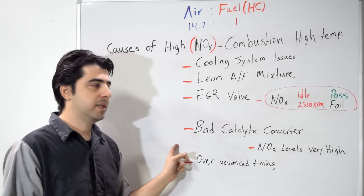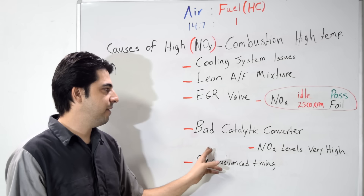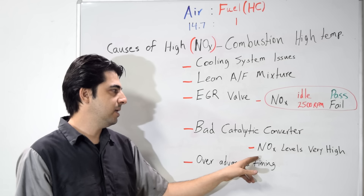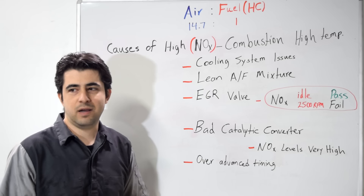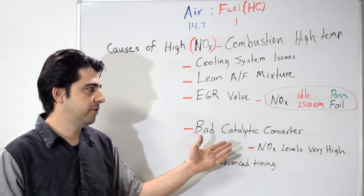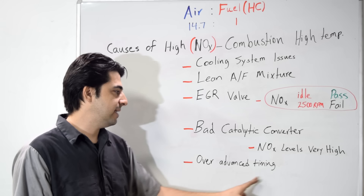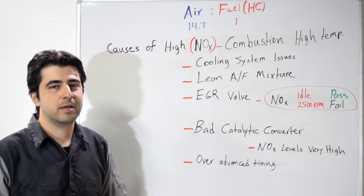If you have a bad catalytic converter, you're also going to have excessive NOx — and probably high HC and CO as well. A giveaway for a catalytic converter that's lost efficiency is NOx levels way off the chart; for example, if the maximum allowed is 500 parts and your reading is 1,500 — double or triple that — that's usually a dead giveaway of a bad catalytic converter. Also, overly advanced timing on a distributor system can increase combustion temperatures, resulting in excessive NOx in your emissions.